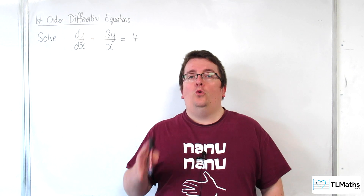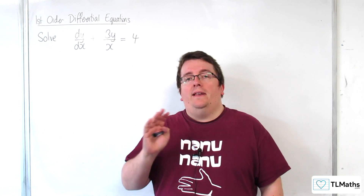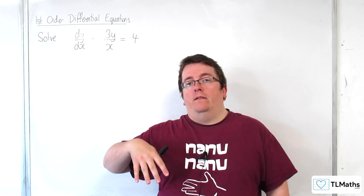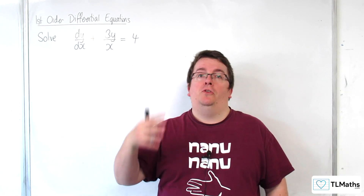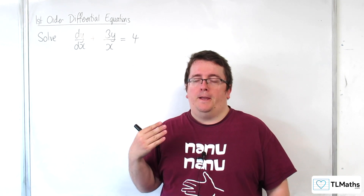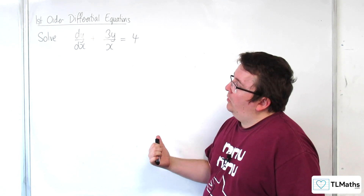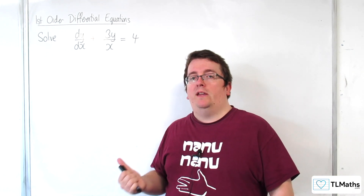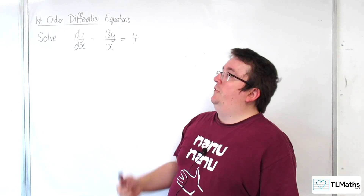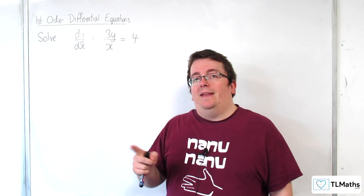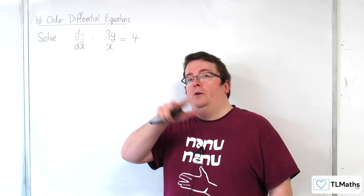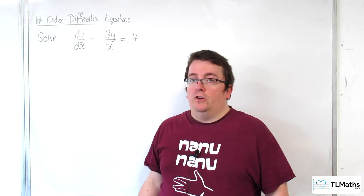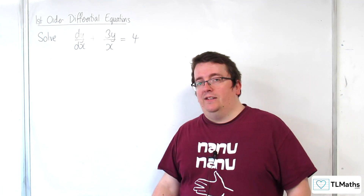In the previous two videos, we saw examples where the left-hand side of the differential equation could be written in the form where we're effectively using the product rule backwards. Now, here is another example where that is not currently the case — it's not in the form where we can do that. The left-hand side is not a perfect derivative. But is there a way of multiplying through the equation by some function of x that will enable us to get it into that form?